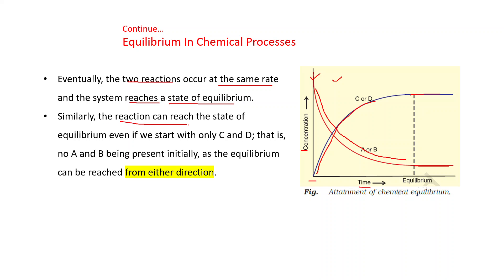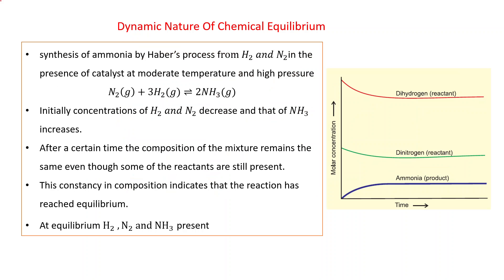Similarly, the reaction can reach the state of equilibrium even if we start with only C and D — that is, with no A and B present initially. Since equilibrium can be reached from either direction, this further demonstrates the dynamic nature of chemical equilibrium.